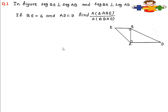The first question: in the figure, segment BE is perpendicular on segment AB, and segment BA is perpendicular on AD. There are two triangles, and BA is the height of both triangles, so it has a common height. It is given that BE is 6 and DA is 9.